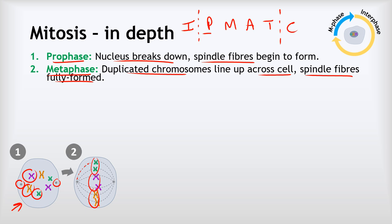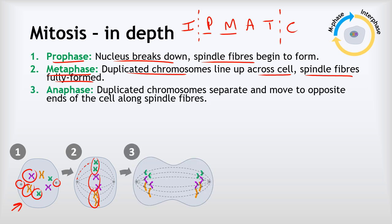The A in IPMATC stands for anaphase. During anaphase, the duplicated chromosomes separate and move to opposite ends of the cell along the spindle fibers. The chromosomes are no longer X-shaped because the duplicated pairs have separated — now we're back to one pair of each chromosome at each end, giving two diploid sets, one at each end of the cell.